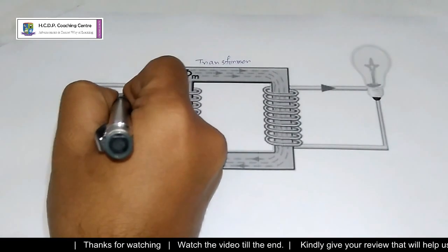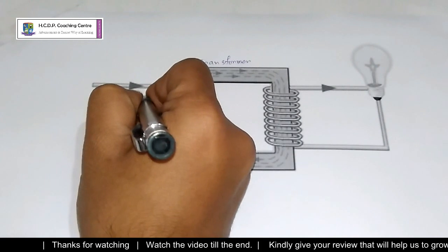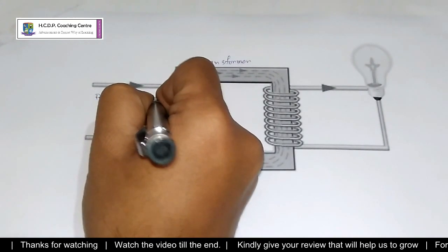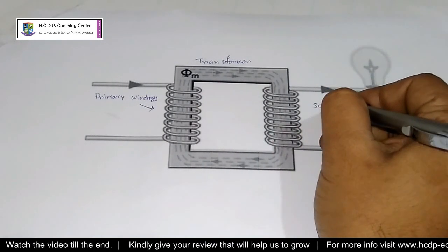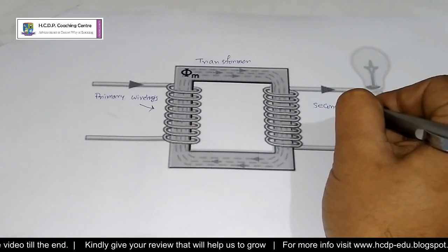A single phase voltage transformer basically consists of two electrical coils of wire, one called the primary winding and another called the secondary winding. For this tutorial we will define the primary side of the transformer as the side that usually takes power.